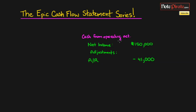We began our operating activities section last time by starting off with net income, as you would for the indirect method, and then we adjusted for accounts receivable. We were slowly converting this net income figure on an accrual basis to a net income on a cash basis.